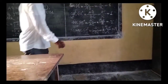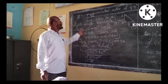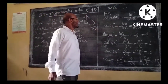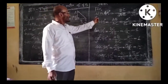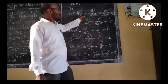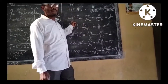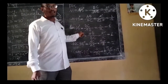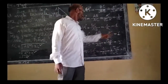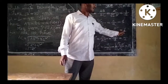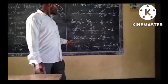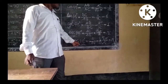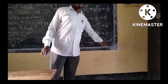Hence, we find for trigonometric ratios at angle 45 degrees: sin 45° equals 1 by root 2, cos 45° equals 1 by root 2, tan 45° equals 1, cot 45° equals 1, sec 45° equals root 2, and cosec 45° equals root 2.